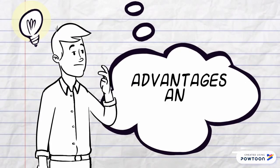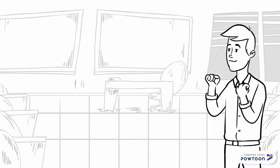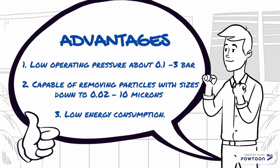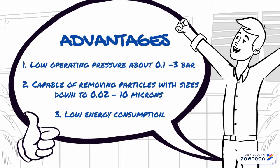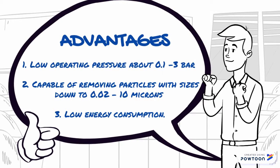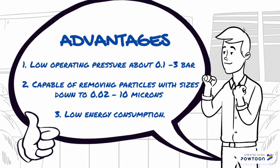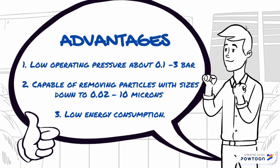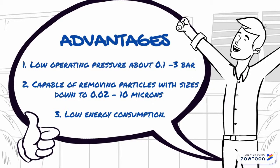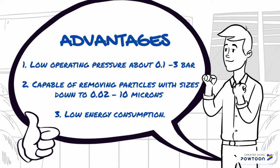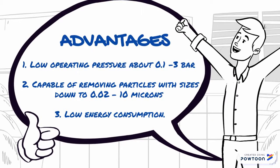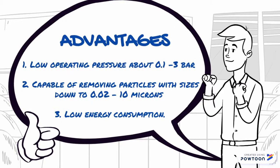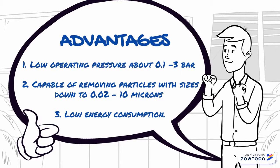Does microfiltration have advantages and disadvantages? The main advantage is the ability to filter particles usually ranging from 0.02 to 10 micrometers in size, such as pink pigment, yeast cells, bacteria, and particles in pure pasteurization. These particles are larger than those filtered in reverse osmosis and ultrafiltration, which increases the pore sizes and the permeate flux. The operating pressure is also low, about 0.123 bar, with minimal pressure loss as low as 0.07 bar in the membrane. For a dead-end setup, energy consumption is low compared to nanofiltration or reverse osmosis.